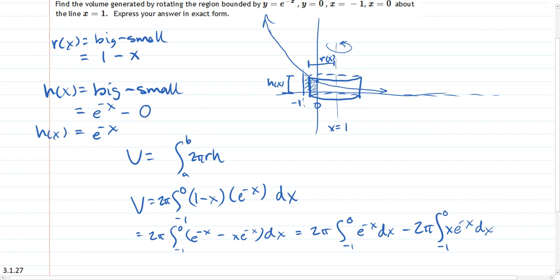So from here, this antiderivative, I would just take a guess. It's probably e to the negative x. You can check it. If you take the derivative, it's negative e to the negative x. So it would be negative e to the negative x. You still have your times 2 pi in there. And you're going negative 1 to 0.